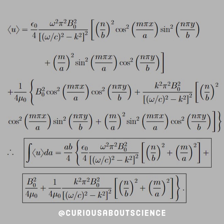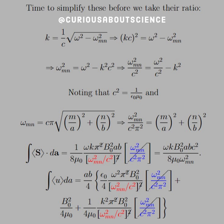I'll let you divvy it up if you wish. But now we need to simplify these before we take that ratio. So if we see that k is equal to 1 over c, square root omega squared minus omega squared mn,